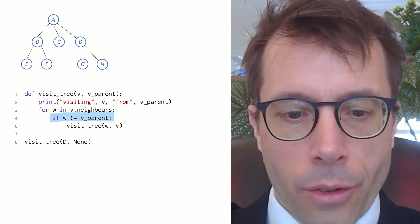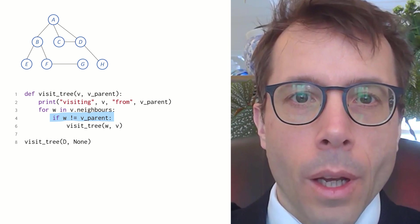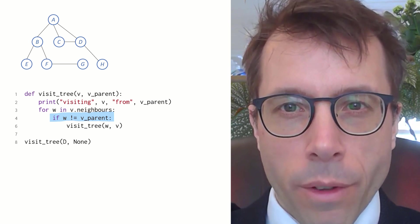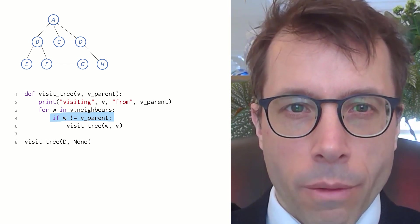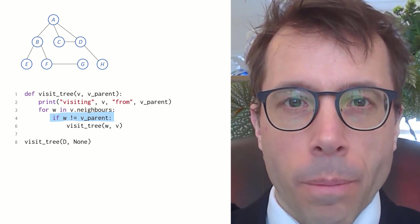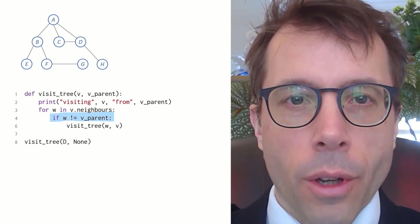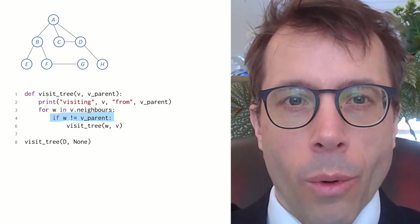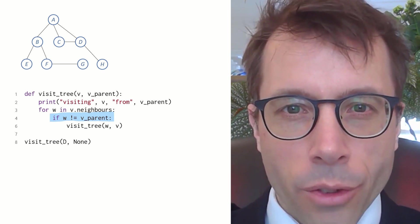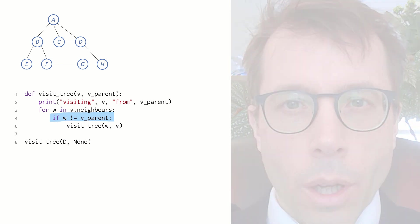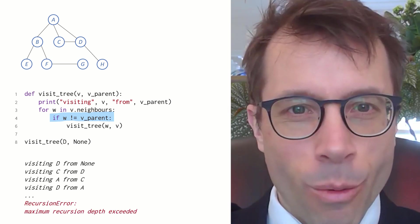OK. Let's try again. I've modified this function to keep track of which vertex we're visiting now, and also of the parent vertex, i.e. where we just came from. That way, it knows to exclude the parent when it's going through the list of neighbours. Question. What do you expect the output of this code to be when we call visit of d, none? Pause the video and work it out.